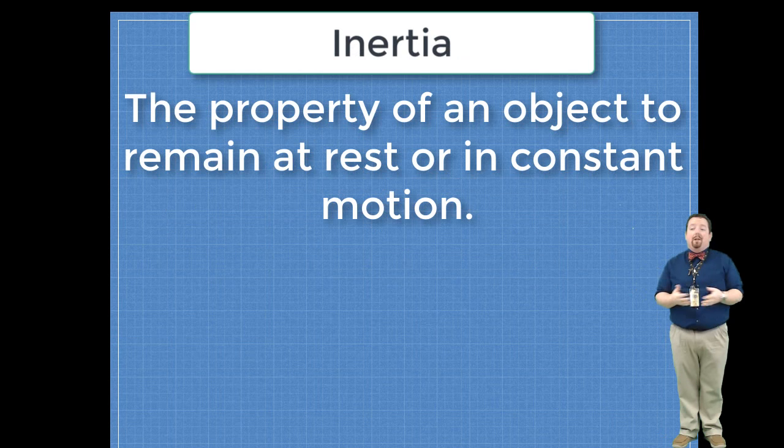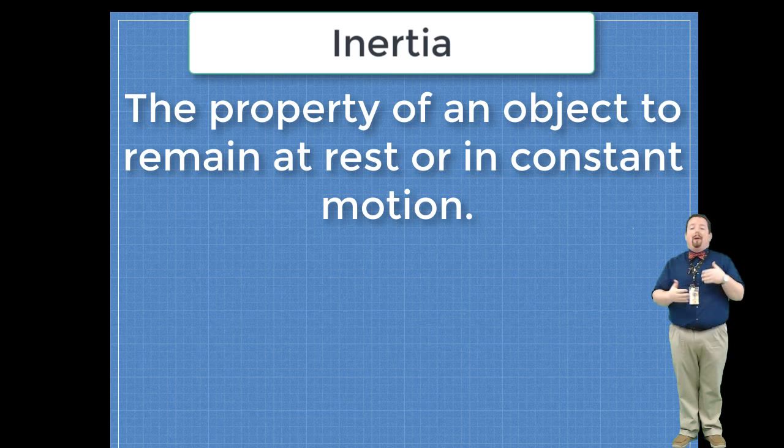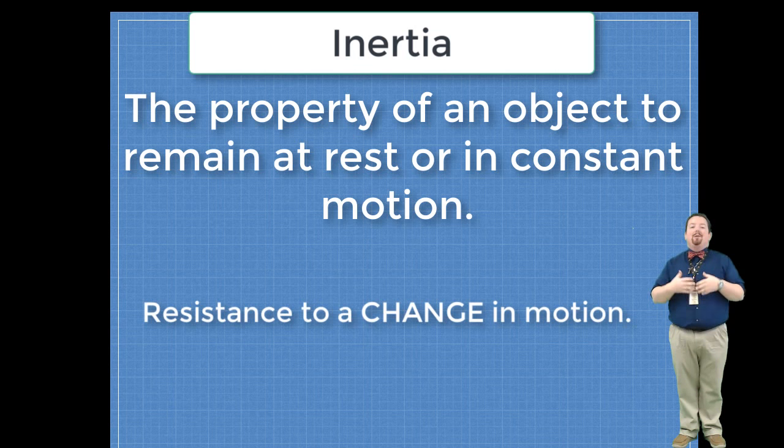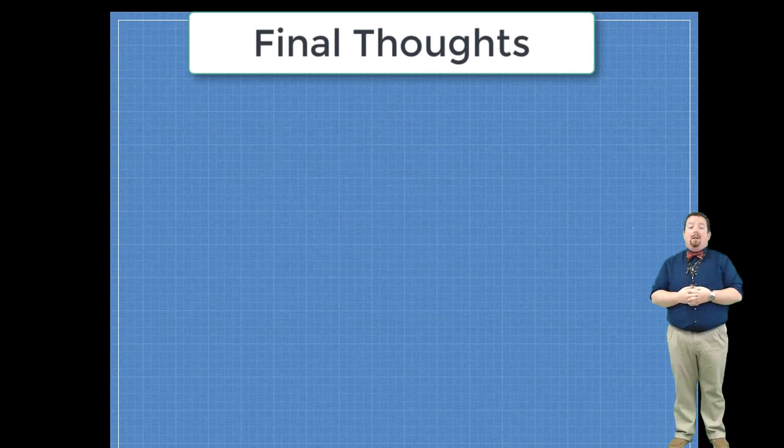We call this inertia. Inertia is the property of an object to remain at rest or in a constant state of motion. We also like to refer to inertia as a resistance to the change in motion.